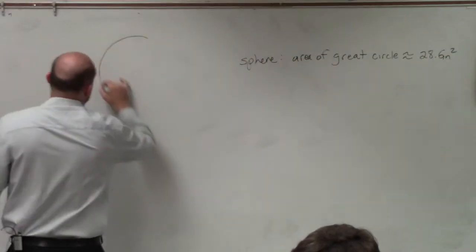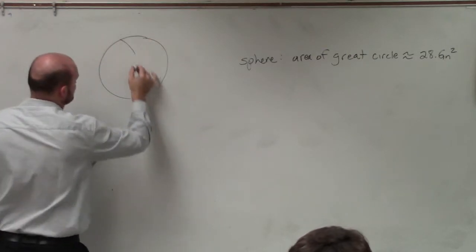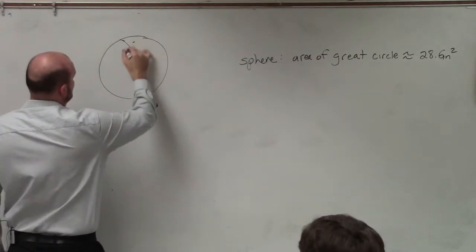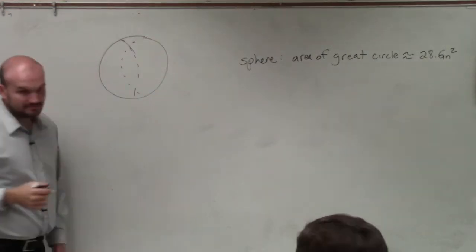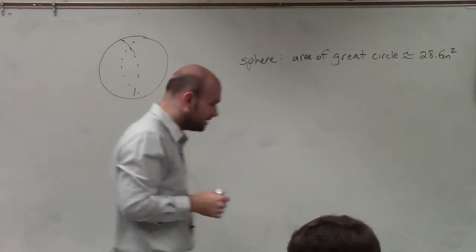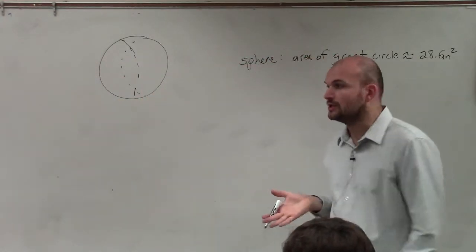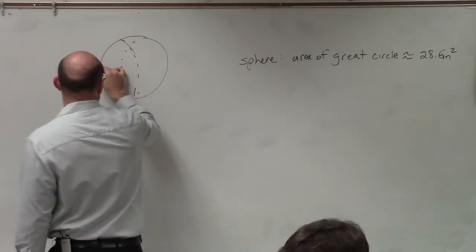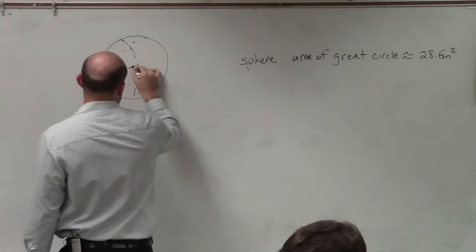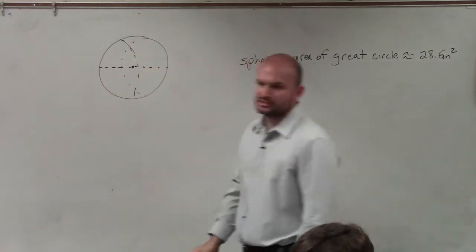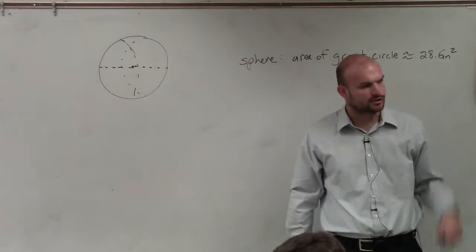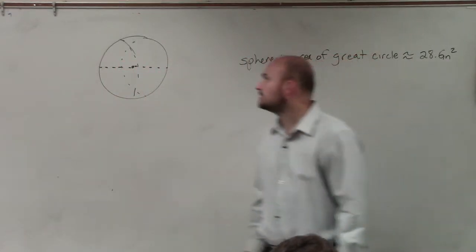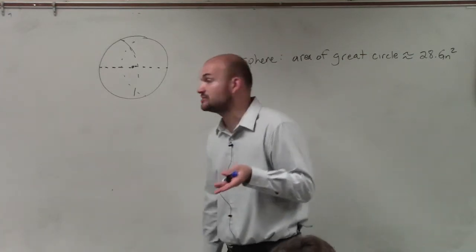So one thing I want to go over with you as far as a great circle, let's say you have this sphere, right? The great circle is going to be the circle that, you guys understand, there's your center and there's your diameter, right? The diameter is directly across your circle and it'd be directly across on the sphere.